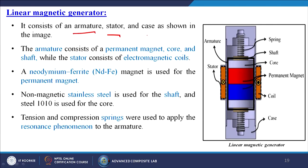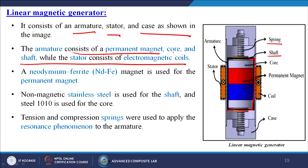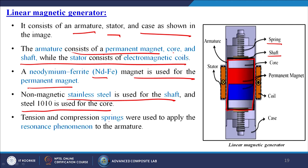For a linear magnetic generator, it consists of an armature, stator, and case. The armature consists of a permanent magnet core and shaft, while the stator consists of electromagnetic coils. A neodymium ferrite (NdFe) magnet is used for the permanent magnet. Nonmagnetic stainless steel is used for the shaft and Steel 1010 is used for the core. Tension and compression springs are used to apply the resonance phenomenon to the armature. Due to the magnetic field, this material moves inside the whole case system.